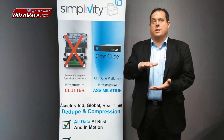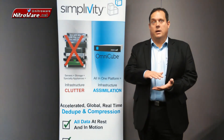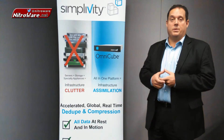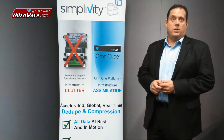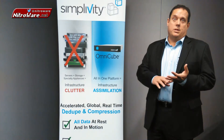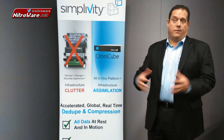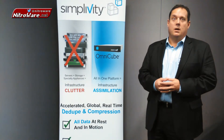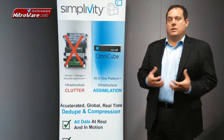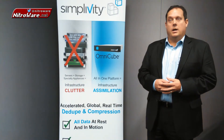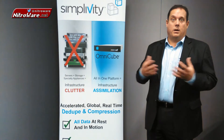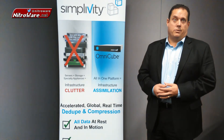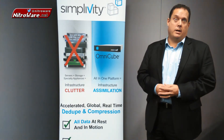What SimpliVity brings to the table is a 2U x86-based building block. We've assimilated all of the functionality of those preceding 8 to 12 different appliances into a standardised 2U building block. We have an OmniStack accelerator card that sits inside our OmniCube, and with that we're able to dedupe, compress and optimise data once and forever for the lifetime of that data within the federation — anywhere within your wide area network. From a management perspective, we defer that up to the hypervisor, using your standard vCenter interface to now manage your entire infrastructure and operations, saving a significant amount of money and operational costs.